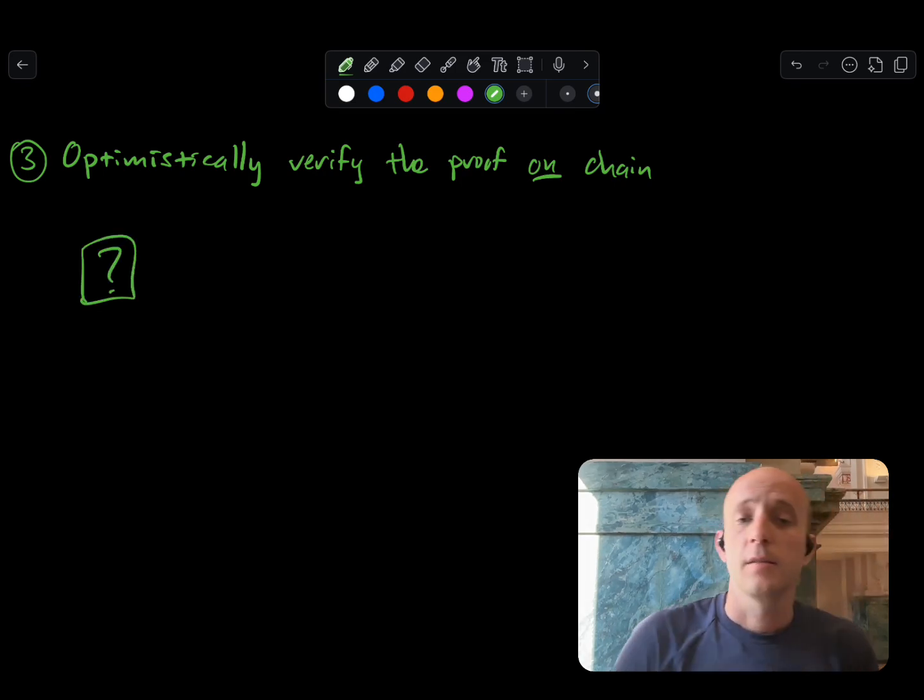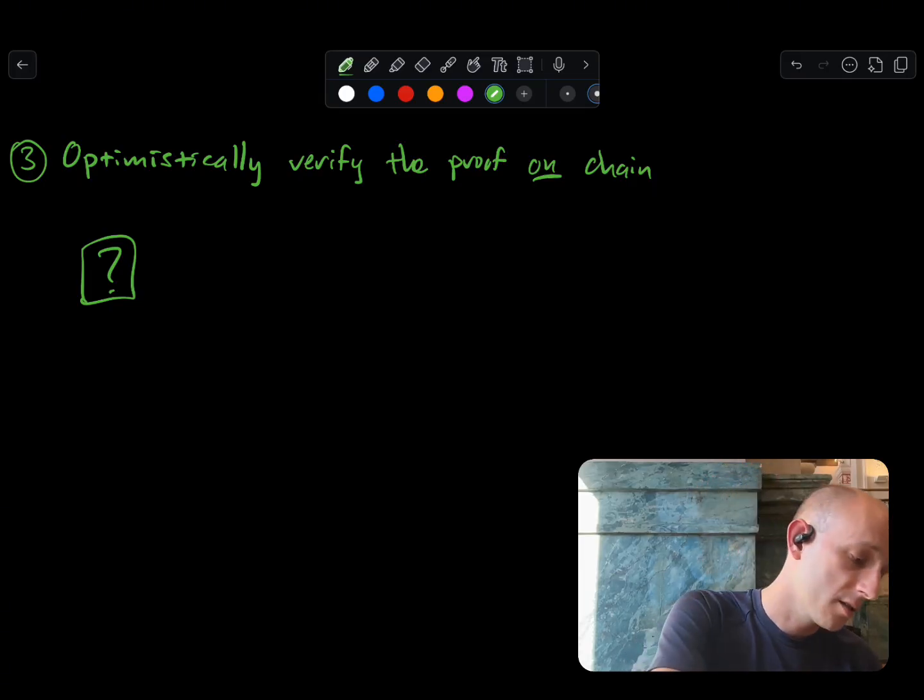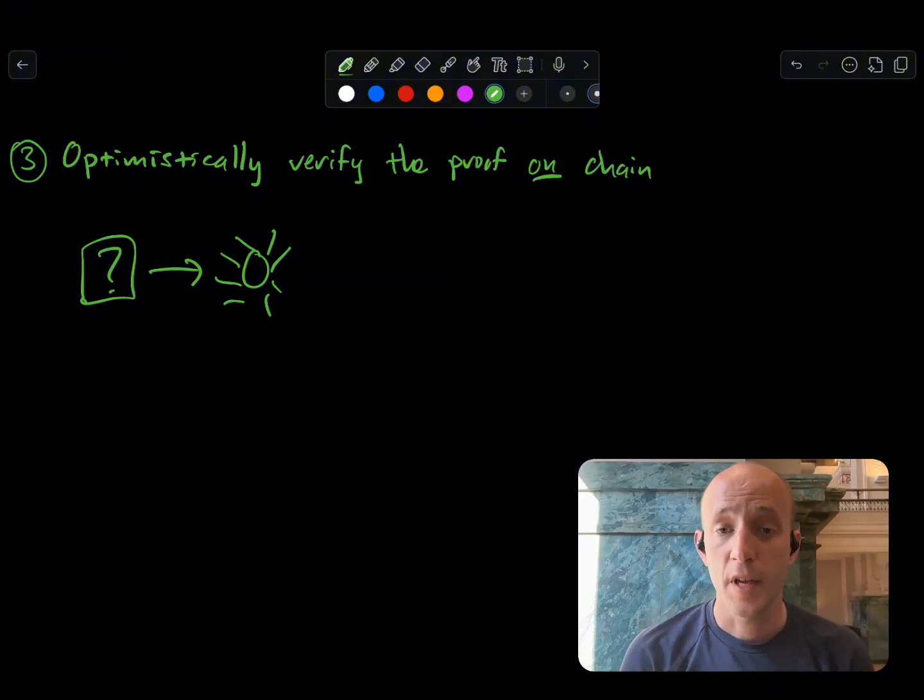What that means is that we claim that the computation was correct and we wait for a challenge. A challenge may or may not happen. A challenge says, I don't think the computation was correct. If I challenge the computation and claim that it's incorrect, then you have to issue a proof. That's our proof that the computation was correct. Now, what do we actually verify? Remember, we said that we can't verify the proof all at once. It just doesn't work. So instead,